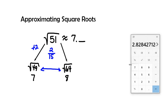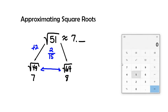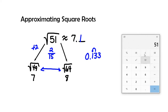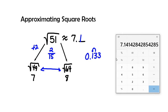So our fraction is 2 over 15. Calculating 2 divided by 15 gives us 0.133. Since the hundredths digit is 3, which is not 5 or higher, we keep the tenths digit as 1. Therefore the square root of 51 is approximately 7.1. Checking with the calculator gives us 7.14 — our approximation of 7.1 is only a hundredth of a point off, so that's a pretty accurate answer.